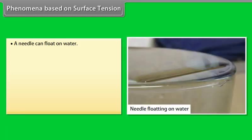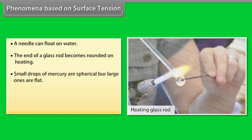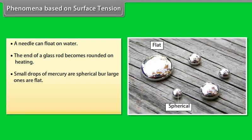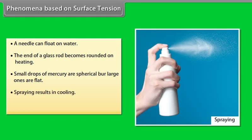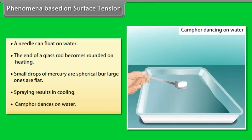Phenomena based on surface tension include: a needle can float on water; the end of a glass rod becomes rounded on heating; small drops of mercury are spherical but large ones are flat; spraying results in cooling; and camphor dances on water.